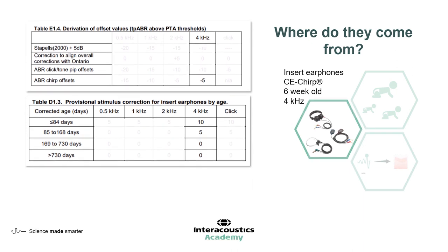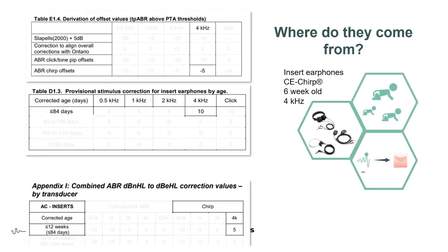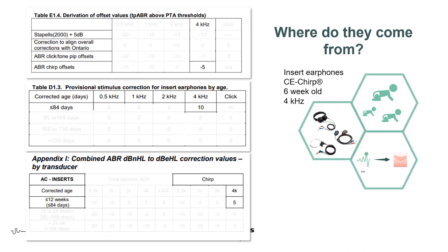Next, we need to consider our transducer correction factors. In this case we used insert earphones at the four kilohertz range. These are divided by age, so we need to make sure we select the correct age band. We are dealing with a six-week-old, so that's the under-84-day category, and that gives us a correction factor of plus 10 for inserts for this age group at four kilohertz. So we have an ABR offset of minus five and an insert age-related correction of plus 10. When we combine those together, minus five plus 10 gives us a correction factor of five — and our combined correction factor document gives us that combined value.